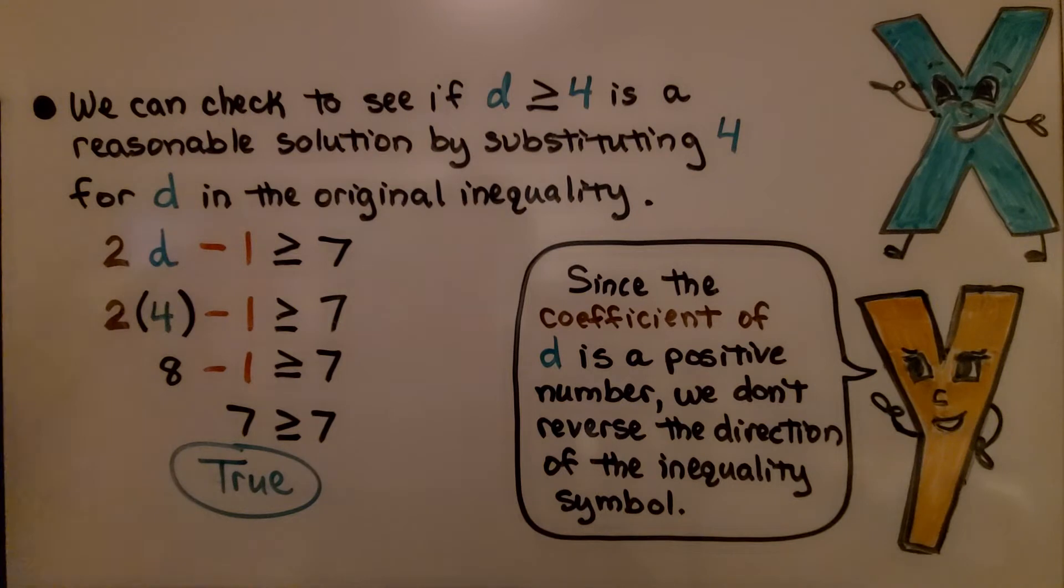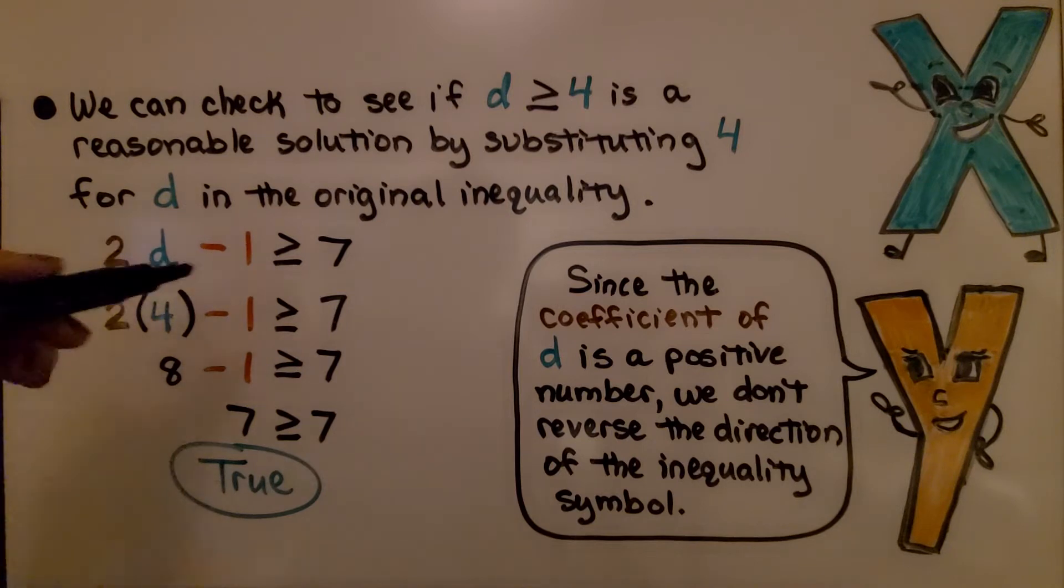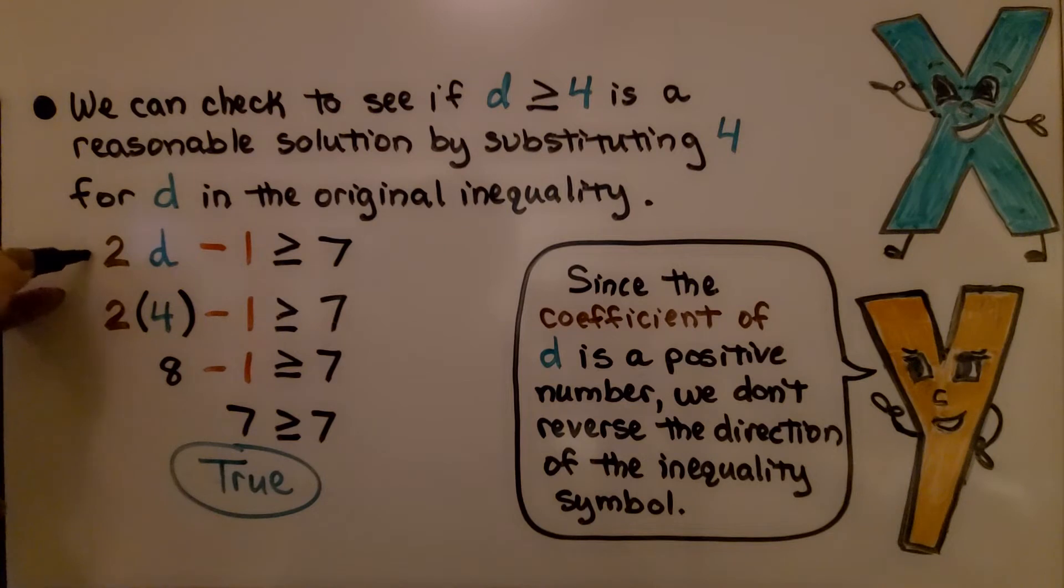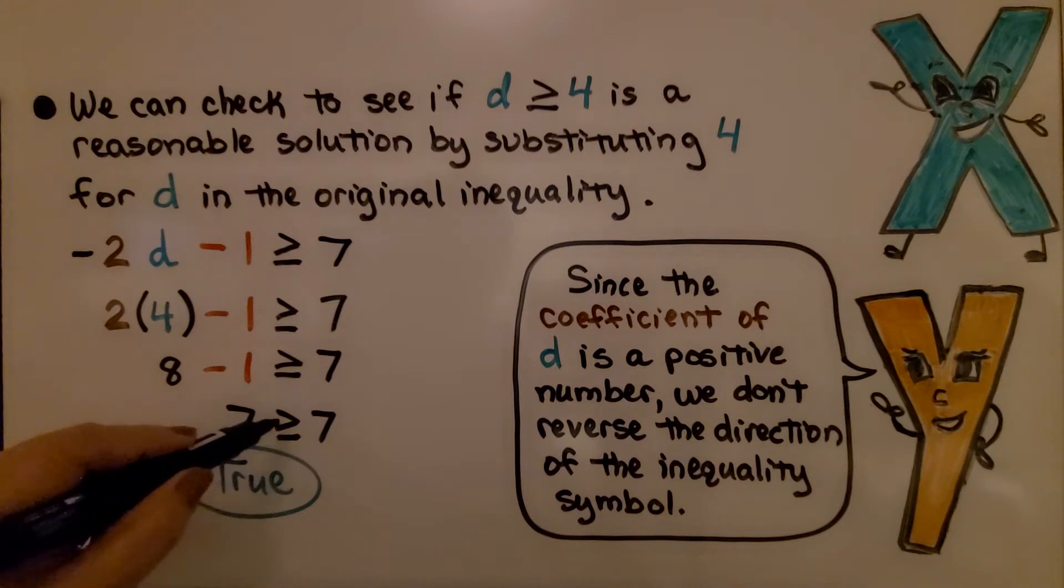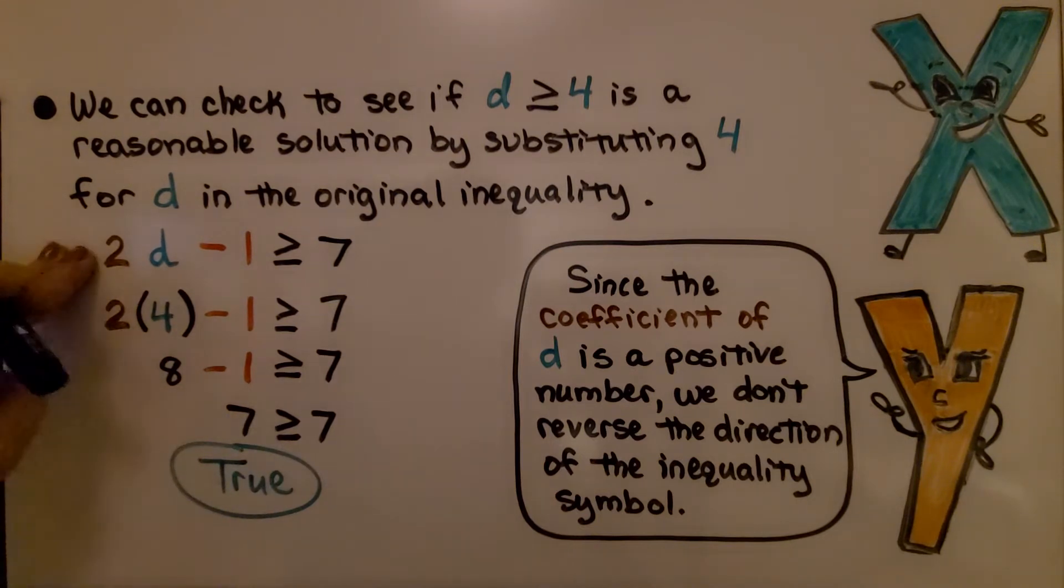Now, since the coefficient of d is a positive number, it was a positive two, we don't reverse the direction of the inequality symbol. Do you remember in the previous videos, we said if this was a negative, then we would have had to reverse the direction of the inequality symbol. But it's positive, so we don't have to do that.